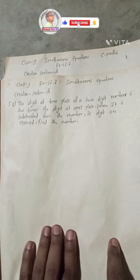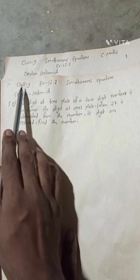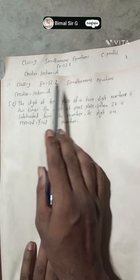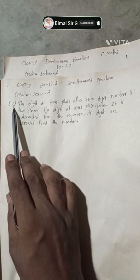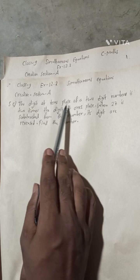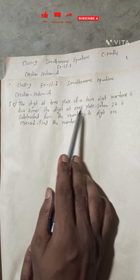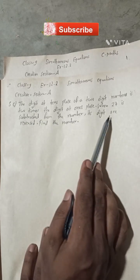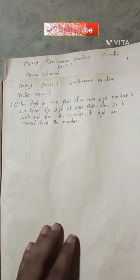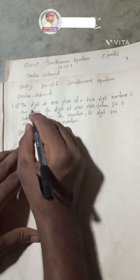Hi everybody, welcome back to Bimal Sarji's YouTube channel. This is a question from Class 9 simultaneous equations, exercise 12.2, creative section, question number 5c. The digit at the tens place of a two-digit number is two times the digit at the ones place. When 27 is subtracted from the number, its digits are reversed. Find the number.